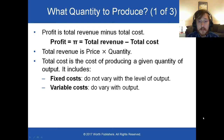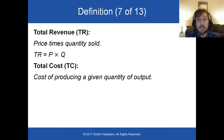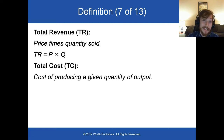Fixed costs are not affected by the quantity you produce, but variable costs are. Total revenue TR equals price P times quantity Q. You may remember from our supply and demand curve that the x-axis is labeled Q and the y-axis is labeled P. Total cost TC is the cost of producing some quantity of output. Both total revenue and total cost are calculated for the same quantity of output.